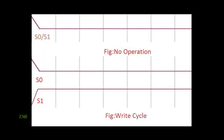We need to select R0, then select No operation. We have to select S0 and S1, then select R0.